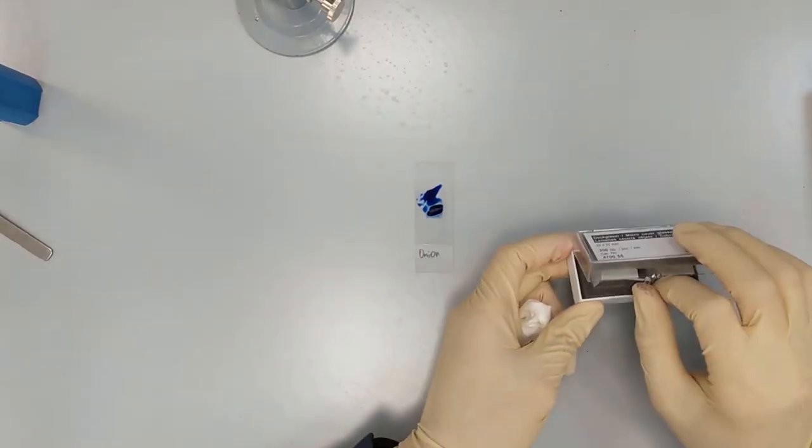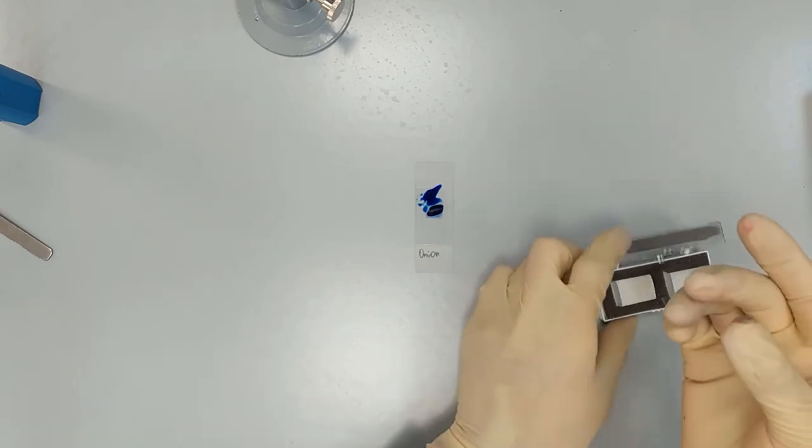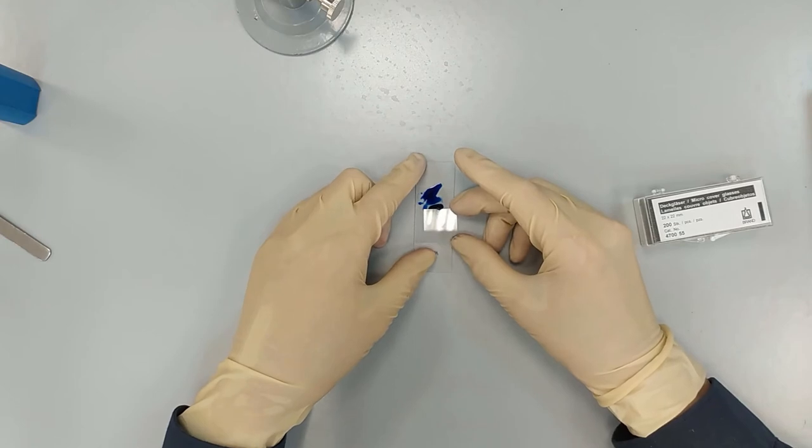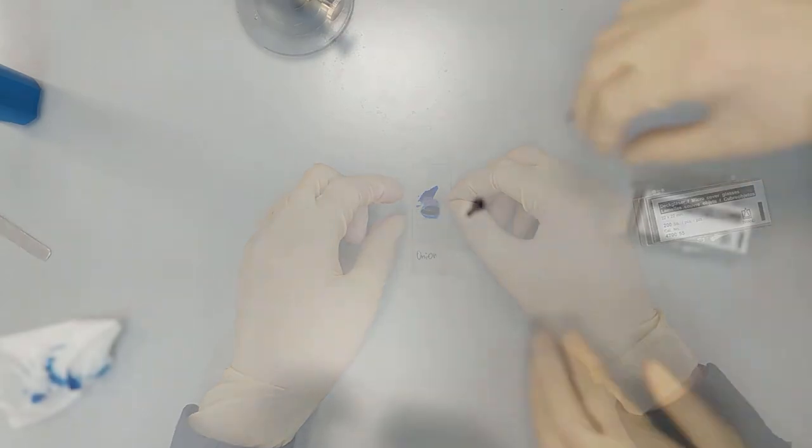Now we take the cover slip. One cover slip is enough, and we are going to place it on top of our cells.